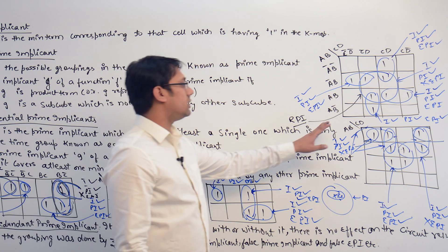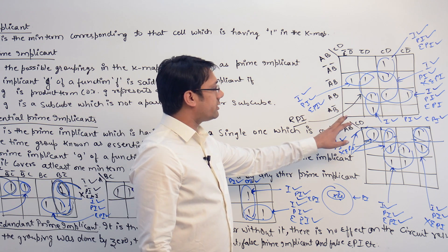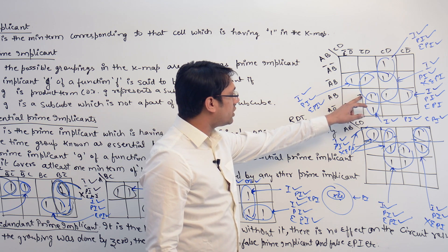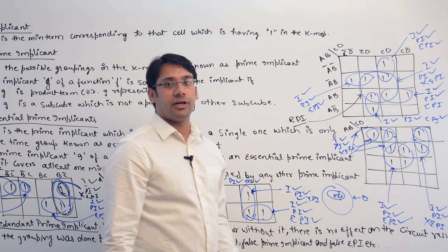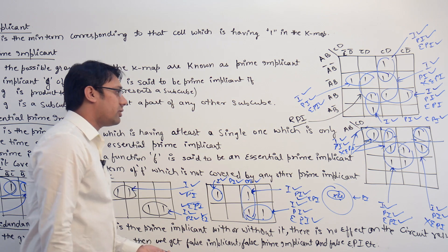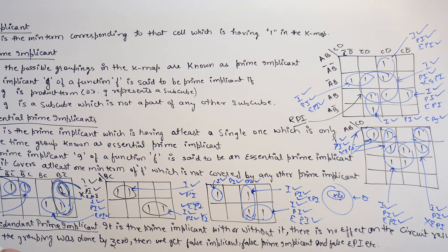Let us try to analyze why this one is a redundant prime implicant — why without it we can still get a correct solution, and why we can ignore this one.